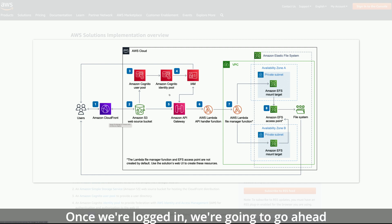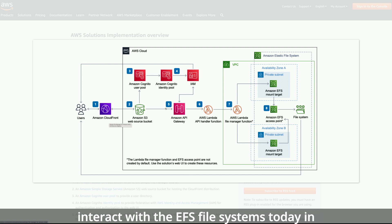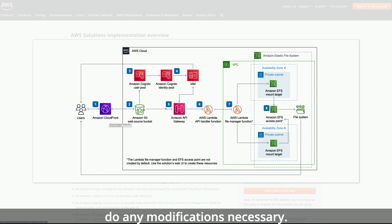Once logged in, the request relays through the Amazon API Gateway, which triggers Lambda functions to crawl and interact with the EFS file systems in order to get files, place them, and do any modifications necessary.